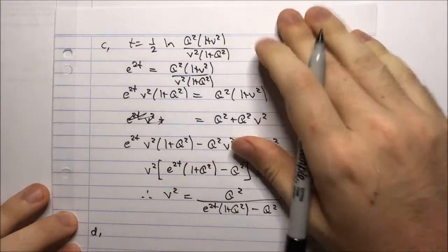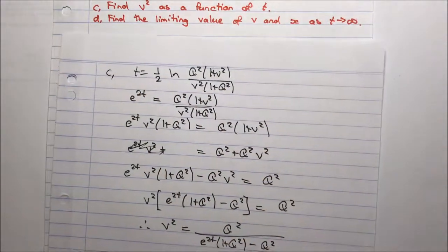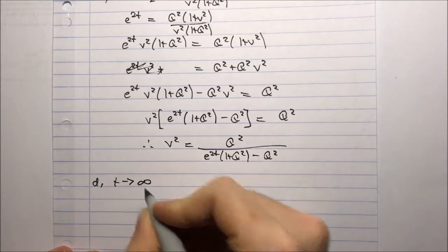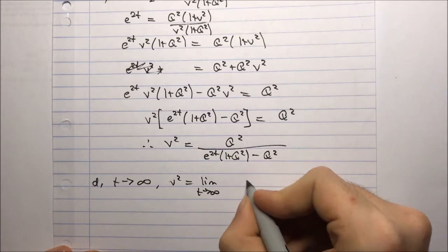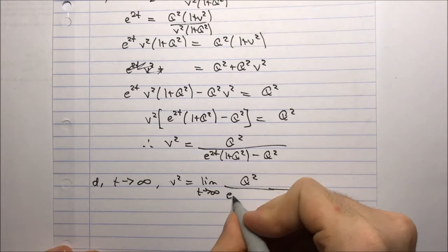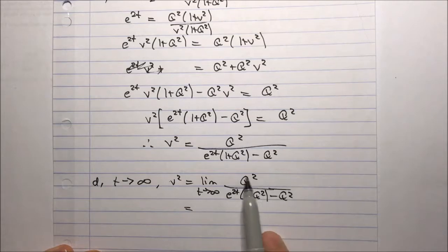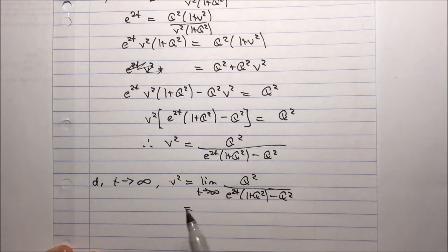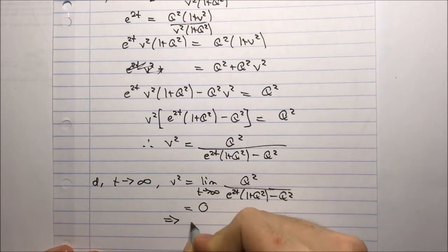For part D, find the limiting values of v and x as t approaches infinity. Taking the limit of v squared equals q squared over (e to the 2t(1 plus q squared) minus q squared) as t approaches infinity: the exponential term grows without bound, so the denominator approaches infinity and the entire fraction approaches 0. Therefore v squared approaches 0, meaning v approaches 0.